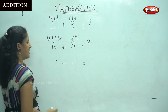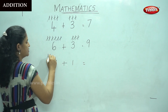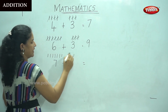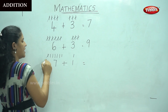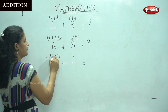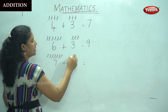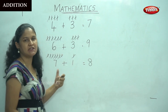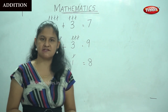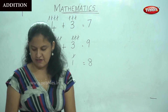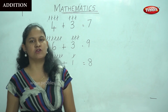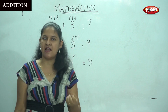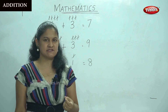Seven plus one. I write one, two, three, four, five, six, seven strokes, plus one more. Adding all: one, two, three, four, five, six, seven, eight — so seven plus one gives me the answer eight. This is another simple method of addition. I do hope it is interesting and you are able to understand simple addition.